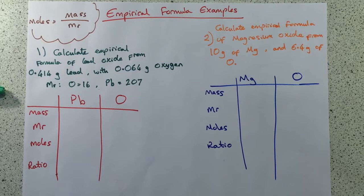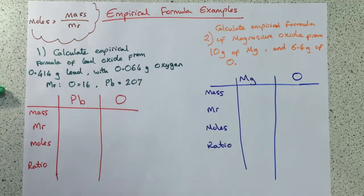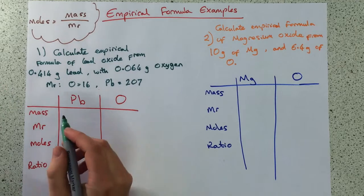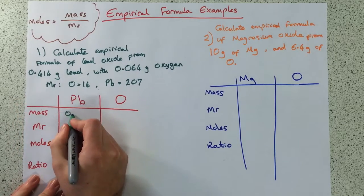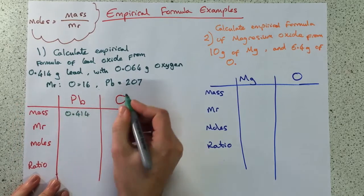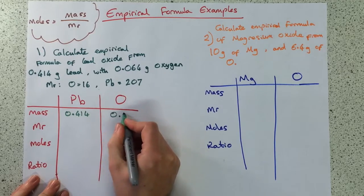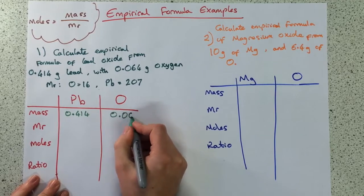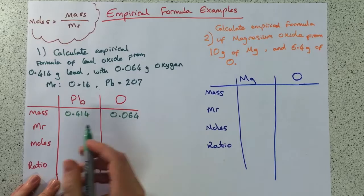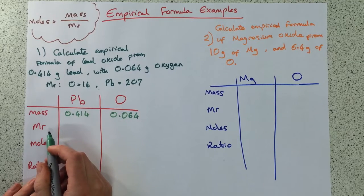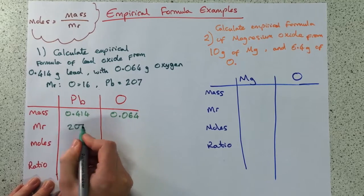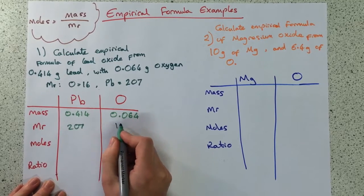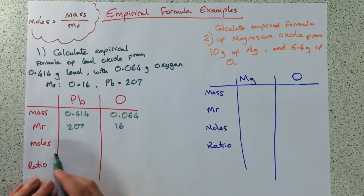Okay, let's continue and go through the answers. For the first one, the mass of lead from the question is 0.414, and the mass of oxygen is 0.064. Next, the relative atomic mass — the MR of Pb and the MR of oxygen — the top numbers are shown here.